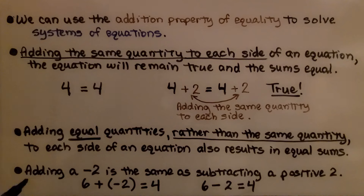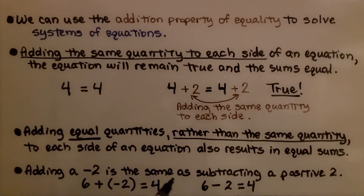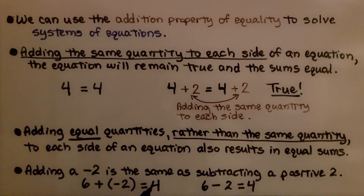Keep in mind: if we're adding a negative two, it's the same as subtracting a positive two. If we have six plus a negative two, it's going to equal four. And six minus two also equals four.